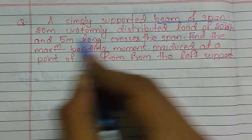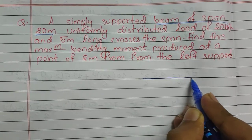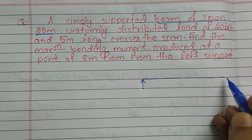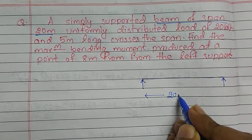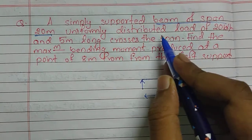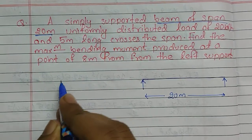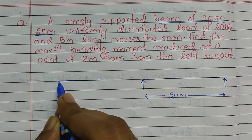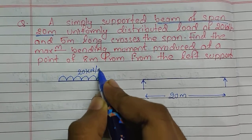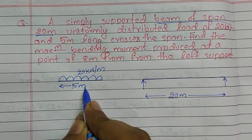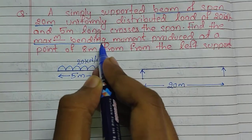The first part is the beam of span 20 meters. Let me draw a beam of span 20 meters. This is our simply supported beam and as per the question this is a 20-meter span. The second part is a uniformly distributed load of 20 kN per meter and 5 meters long — let me draw it here. This is our UDL of 20 kN per meter and its span is 5 meters.